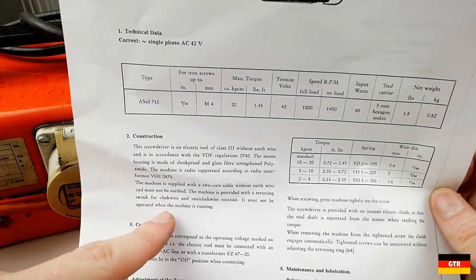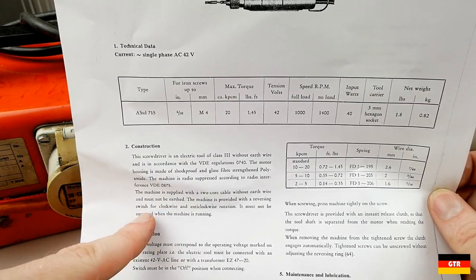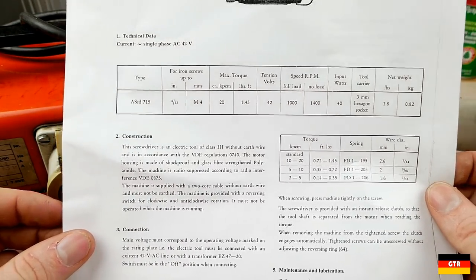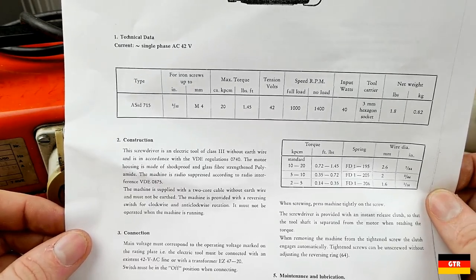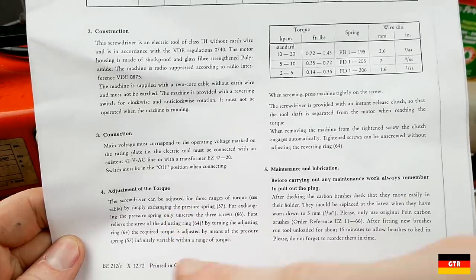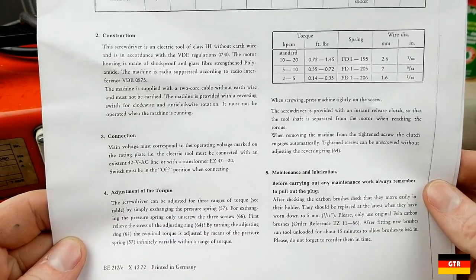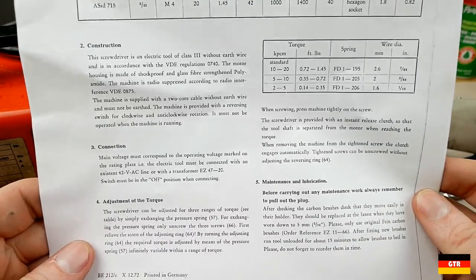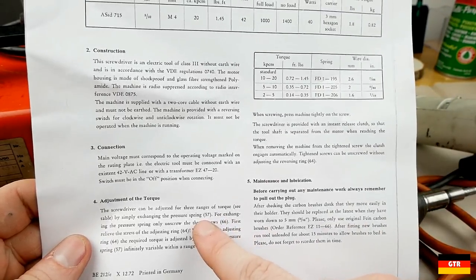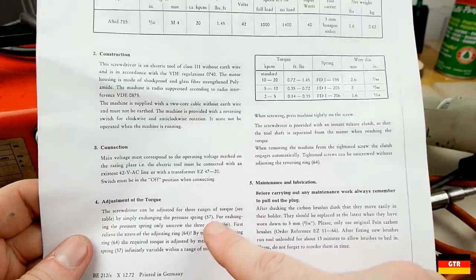So it says the machine is supplied with a two-core cable without earth wire and must not be earthed. The machine is provided with a reversing switch for clockwise and anti-clockwise rotation. It must not be operated when the machine is running.